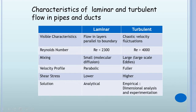For flow through non-circular pipes, the Reynolds number is based on the hydraulic diameter D_H = 4A/P, where A is the cross-sectional area and P is the perimeter. For a circular pipe D_H = D; for a square duct D_H = side length; for a rectangular duct D_H = 4ab/(2(a+b)). The transition from laminar to turbulent also depends on surface roughness, pipe vibration, and flow fluctuations.